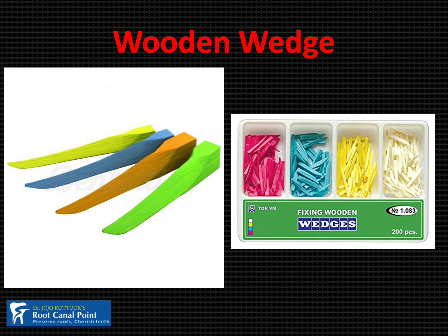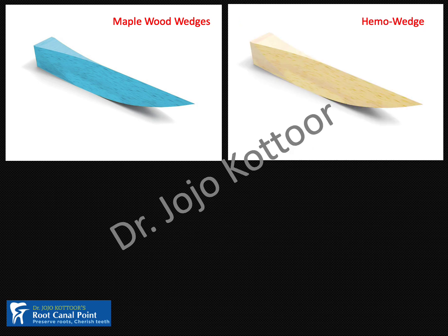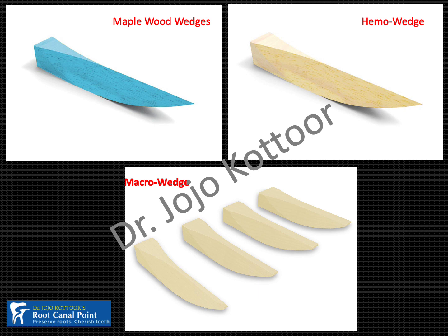Now let's discuss the wooden wedge, which comes in two forms: round or triangular. The ideal wooden wedge should be made of maple wood. Polydentia is one company that produces wooden wedges made from maple wood. The importance of maple wood is that it absorbs moisture and swells. Oak wood is also good — it is better in terms of moisture absorption than maple wood. You can also get hemo wedges, which are placed on inflamed gingiva to prevent further bleeding.